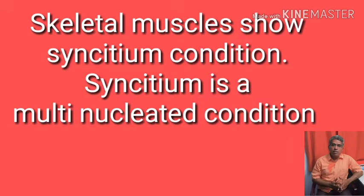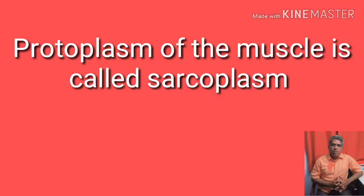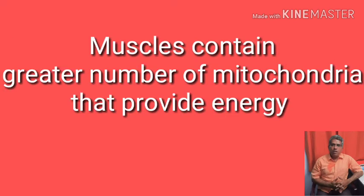Whereas if the same multi-nucleated condition is found in a plant cell, it is called synocyte. Skeletal muscle cell forms a syncytium structure because the skeletal muscle fiber is formed by the fusion of many embryonic uninucleated myoblasts. Inside the muscle fiber, there is a protoplasm called sarcoplasm. In this sarcoplasm, there are floating cell organelles like endoplasmic reticulum and mitochondria. Mitochondria in the muscle are responsible for providing energy, as mitochondria are the powerhouses of any cell.